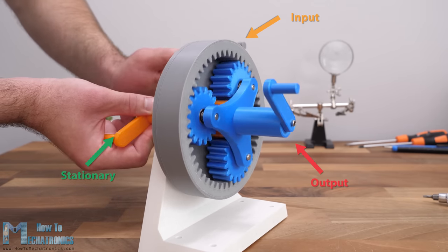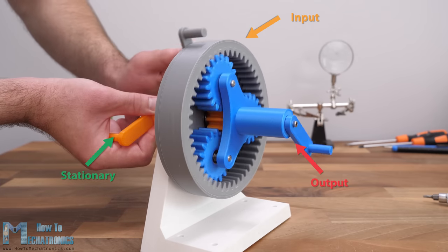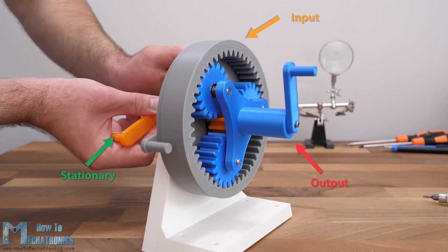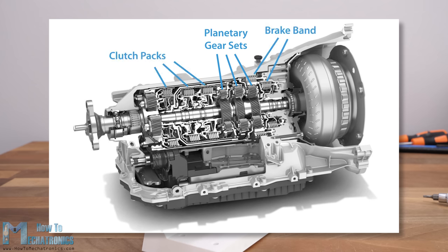This unique feature of the planetary gear set to be able to produce different outputs with the same setup is used in automatic transmissions to achieve different speeds. Several planetary gear sets are connected in series and with the help of some clutches that can control which component will be held stationary, we can achieve different output speeds.